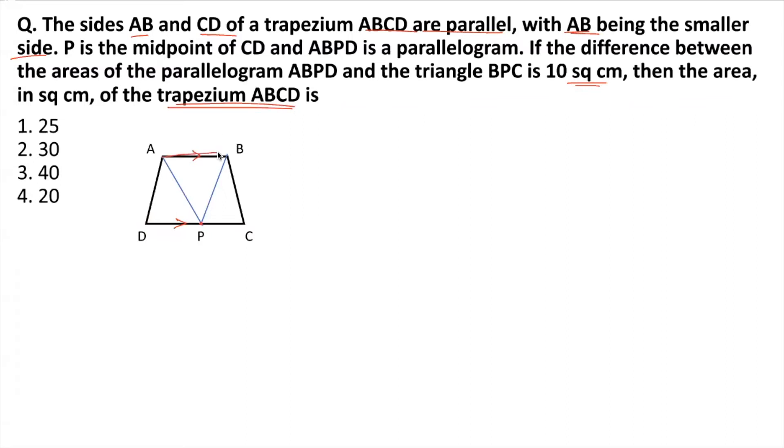So basically we have been given ABPD as a parallelogram and P as the midpoint. Of course, ABCD is a trapezium. The difference of the areas of this parallelogram ABPD and the triangle BPC is 10 square centimeters. Then the area for the entire quadrilateral is. Alright, let's solve the question now.